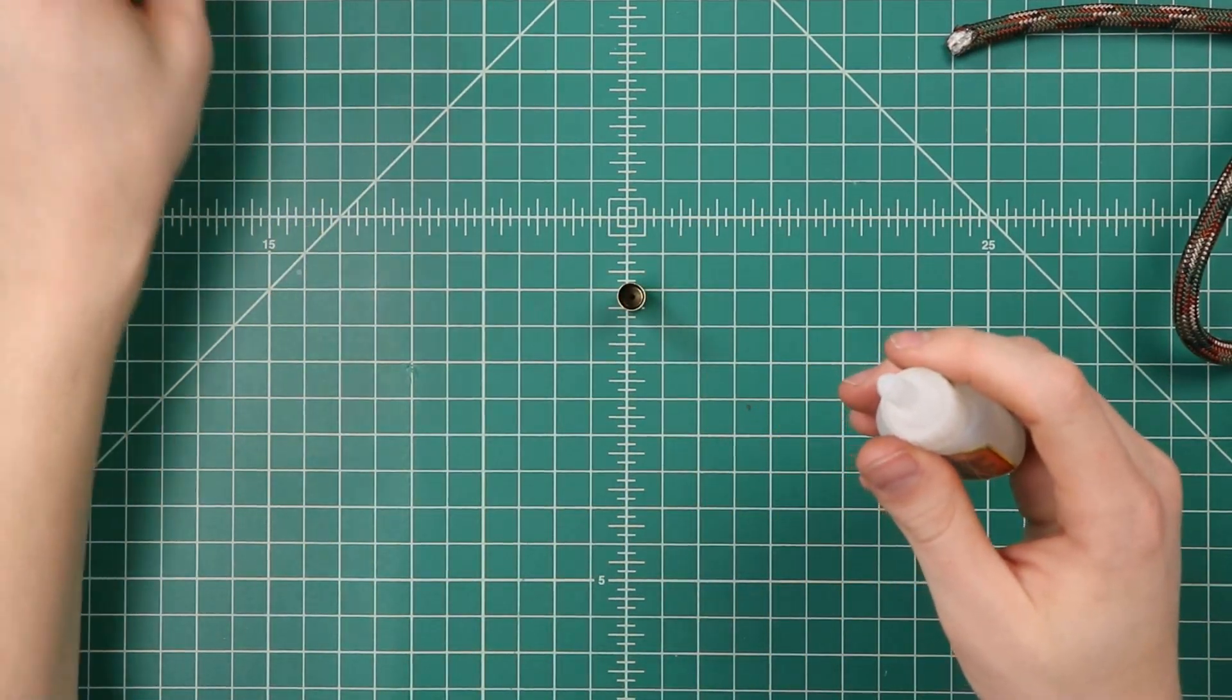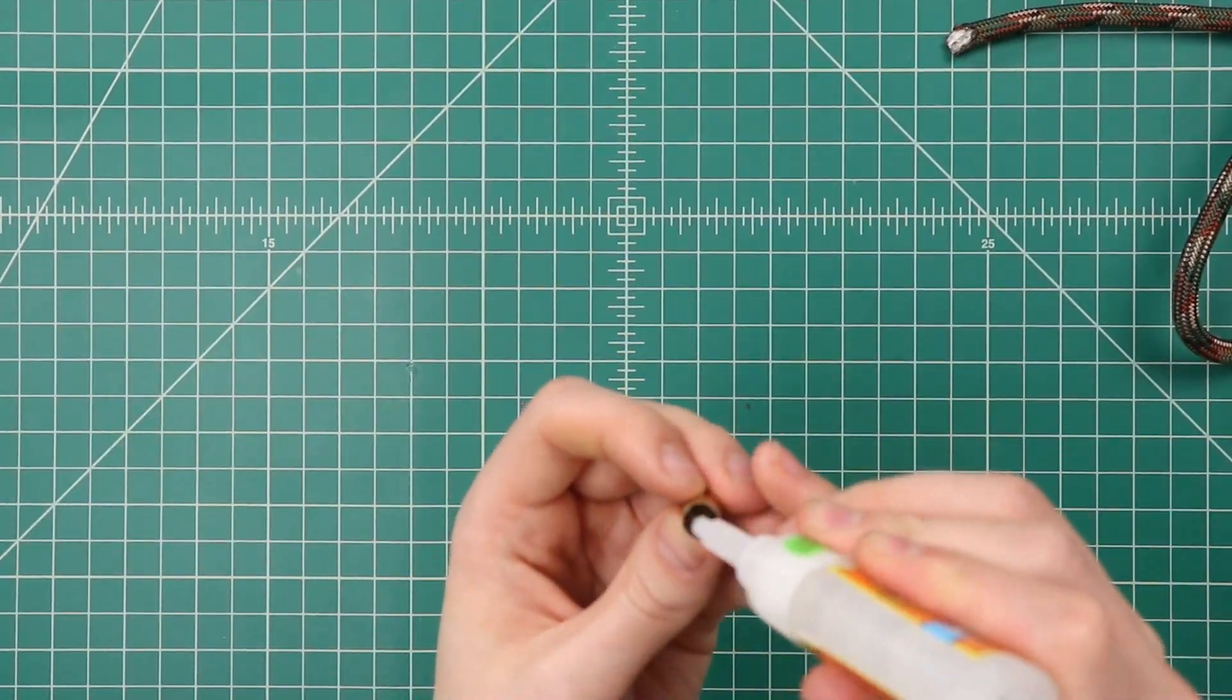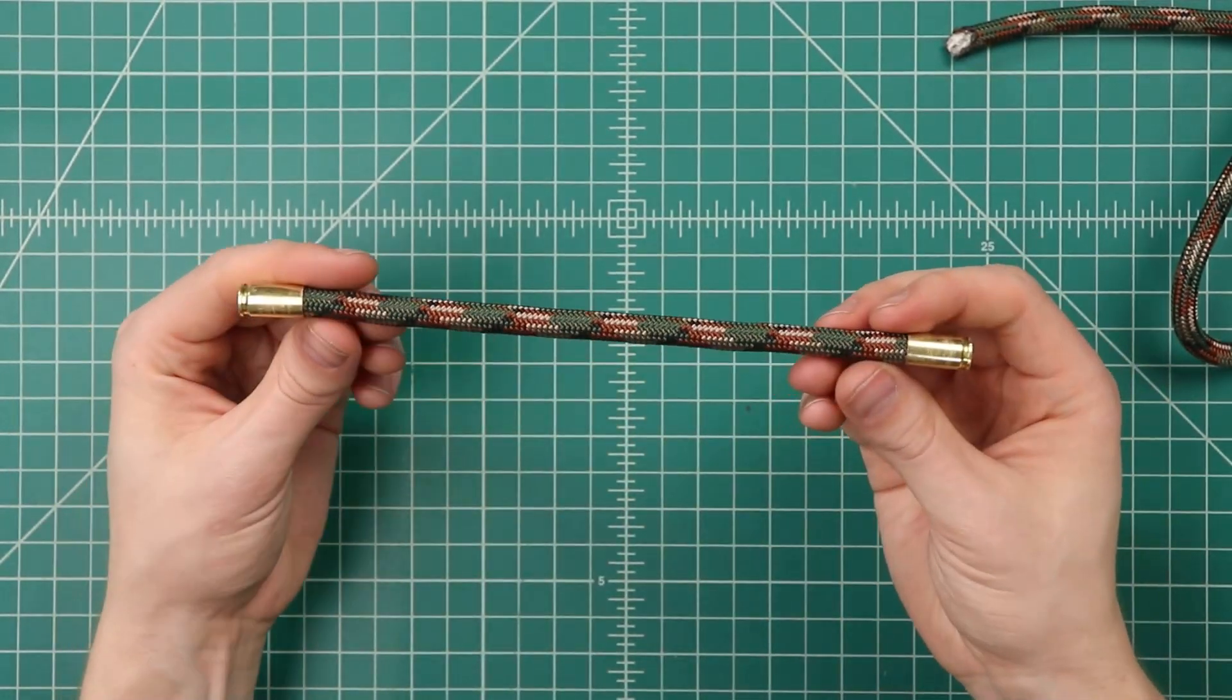Now we can go ahead and add our glue to the second casing. Same as before, just make sure you get it around all the edges. And again, we'll just let that dry a bit before we bend it into shape.